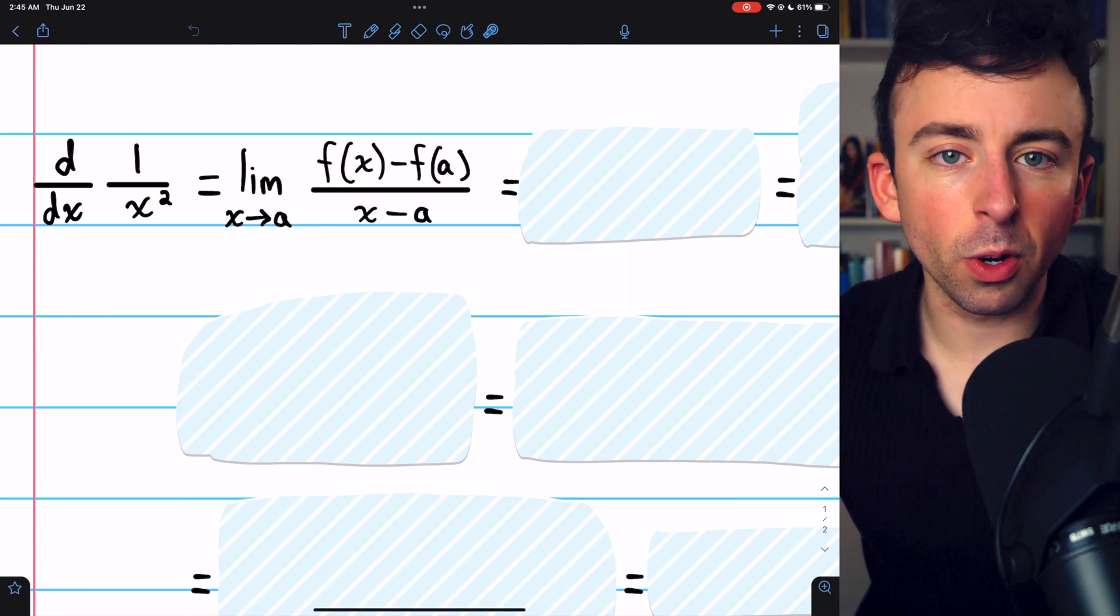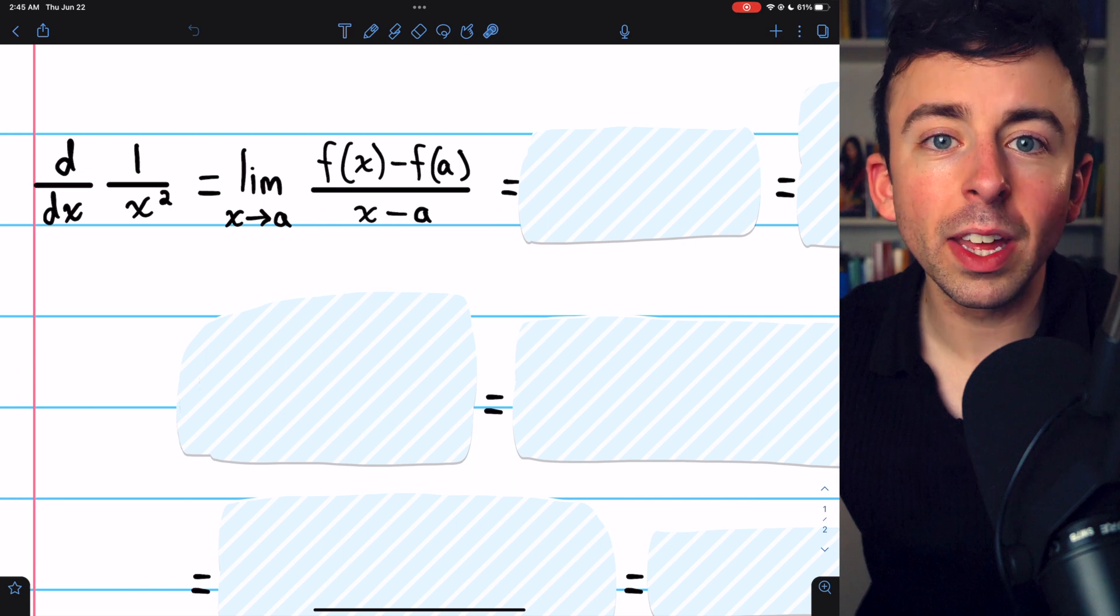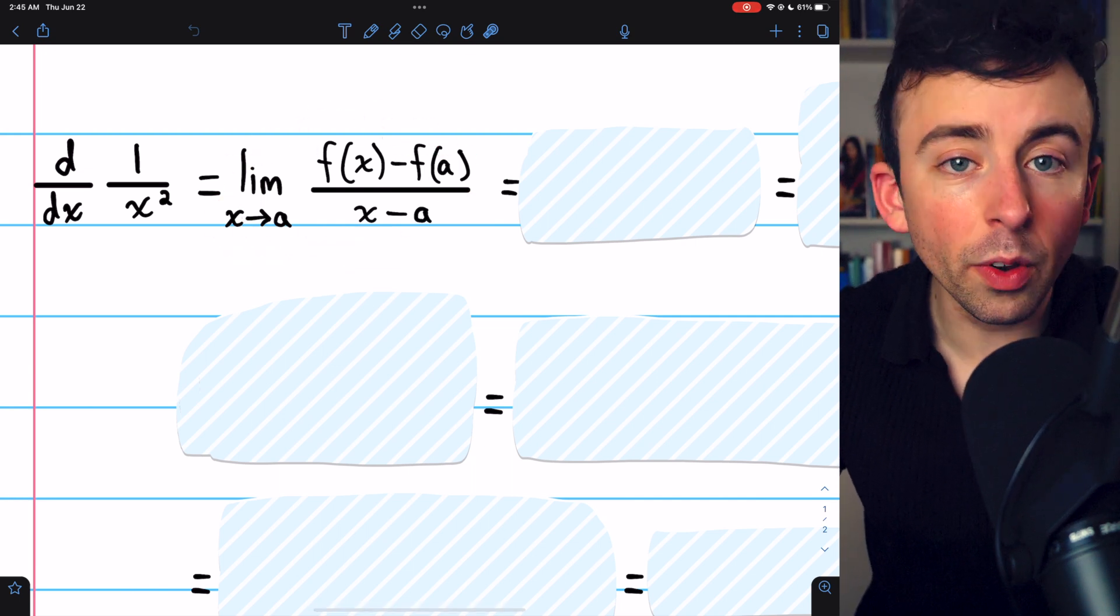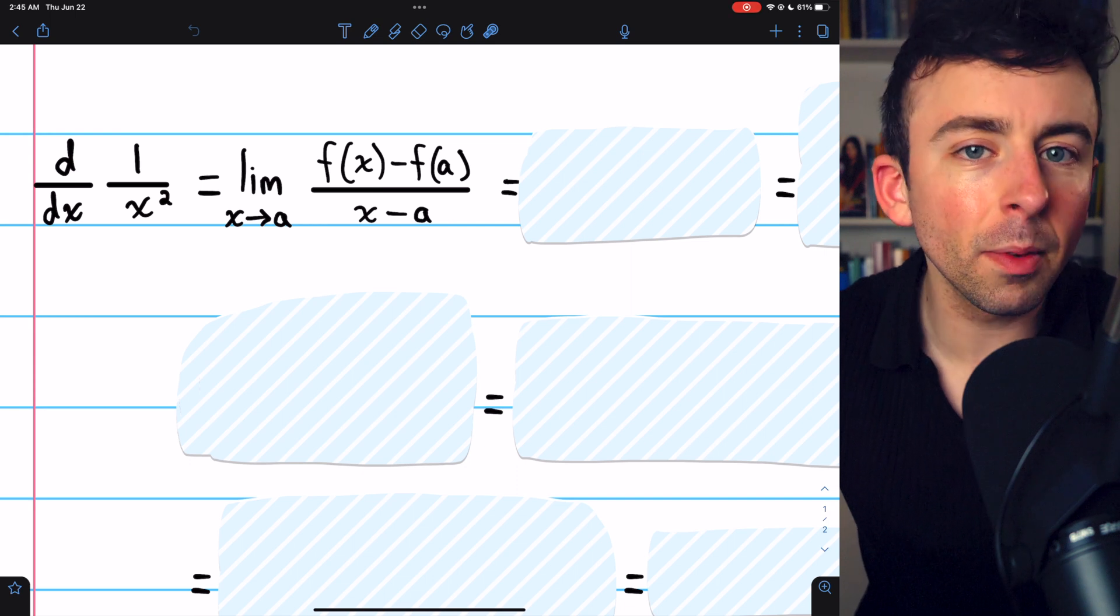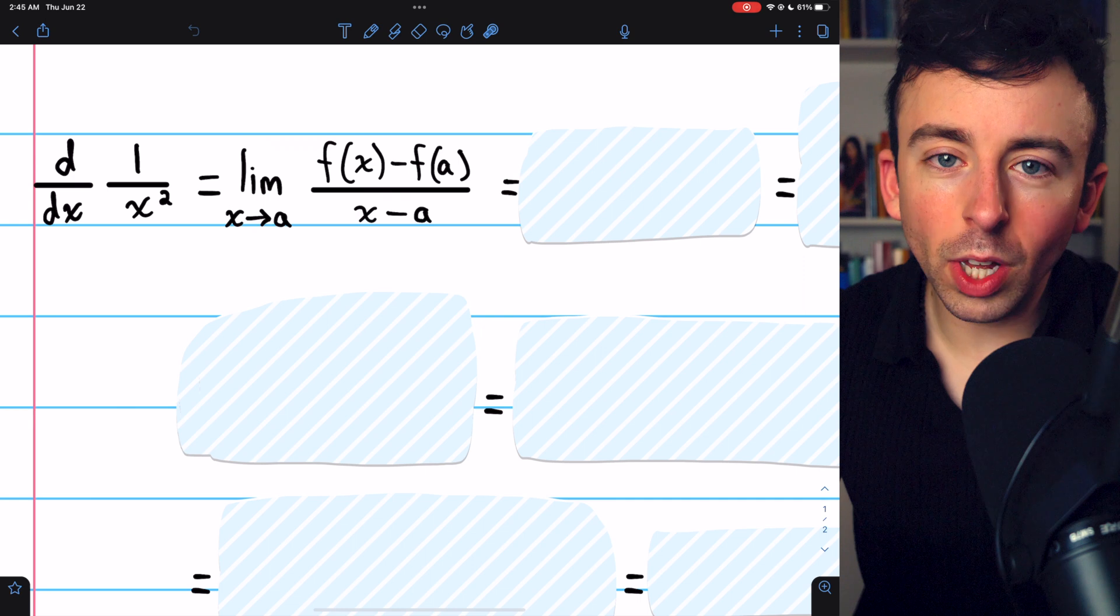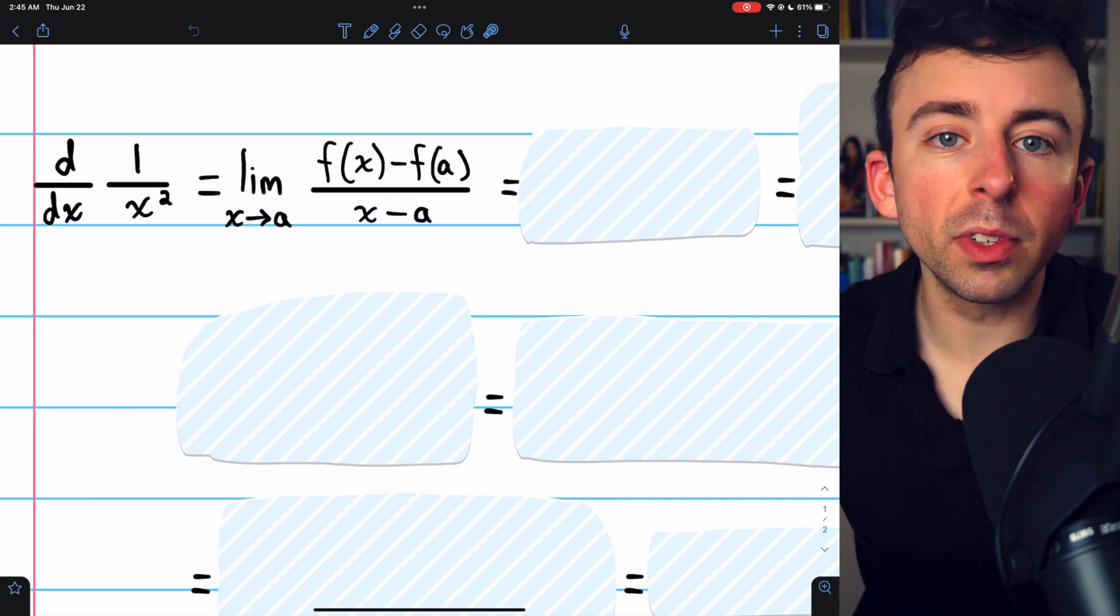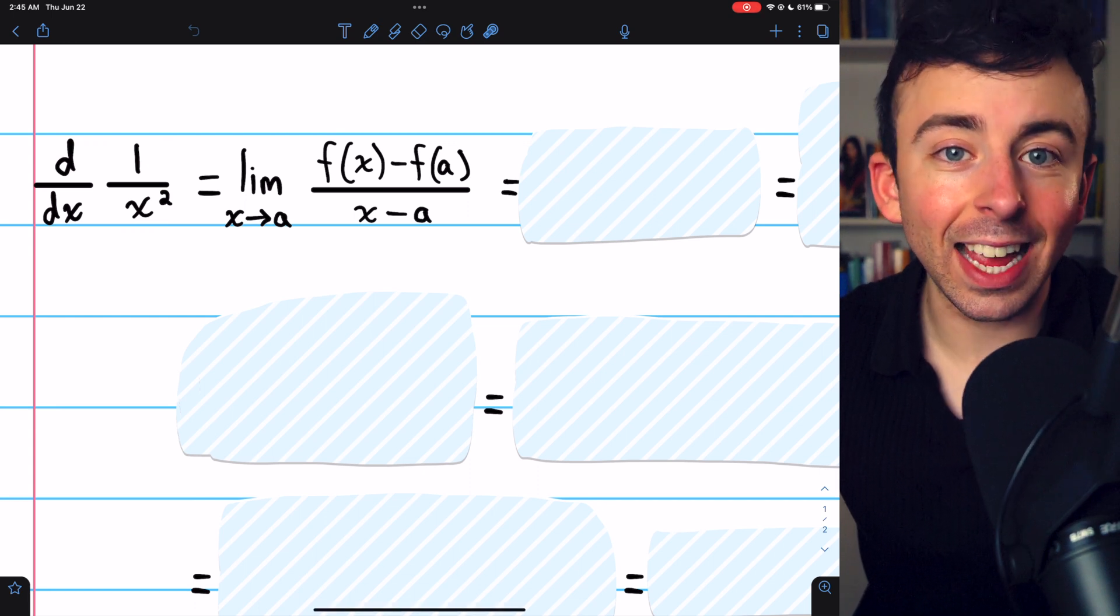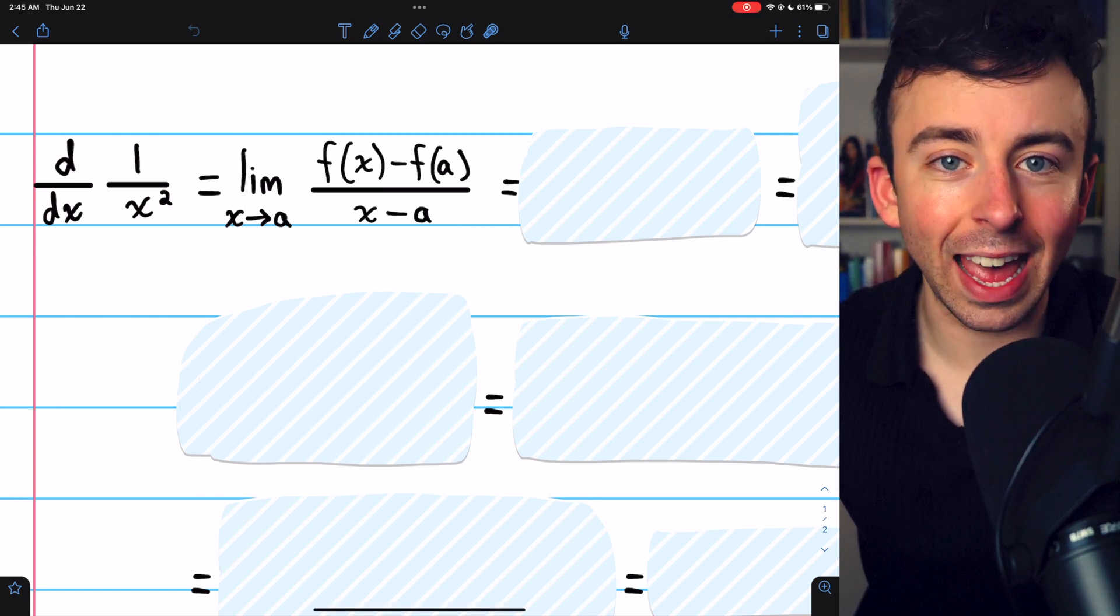If you're more familiar with the h approaching 0 definition of the derivative, check the description for a link to my lesson introducing this equivalent form of the derivative. Sometimes this one is easier to work with. Once we've evaluated this limit, we'll have a function completely in terms of a, which tells us what the derivative of 1 over x squared is at any value x equals a.